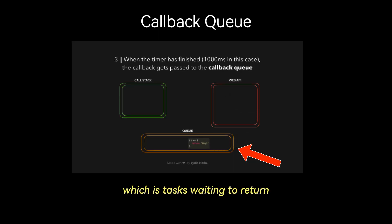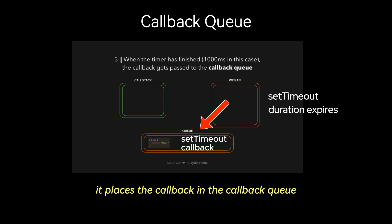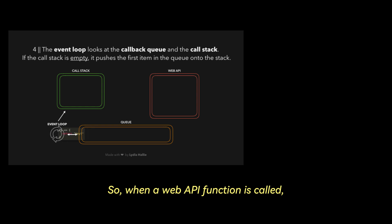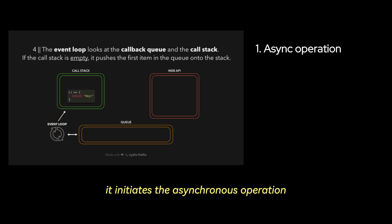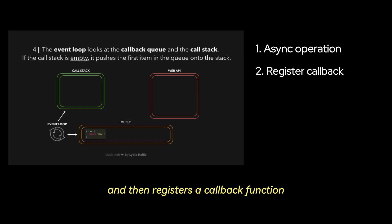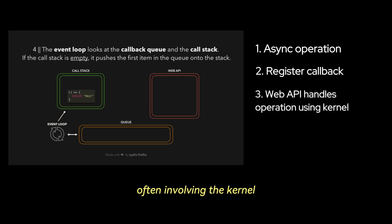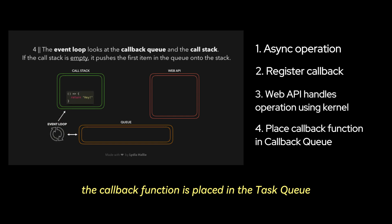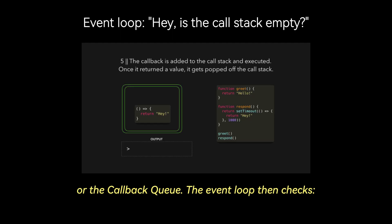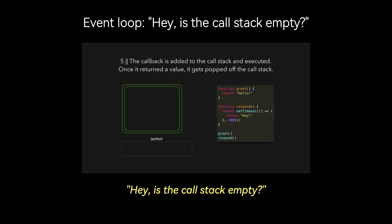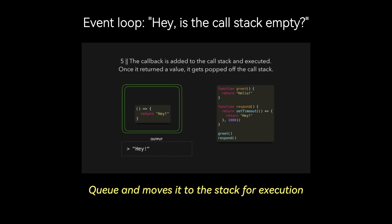Now we have the callback queue, which is tasks waiting to return. Once the web API finishes its job — for example, setTimeout expires — it places the callback in the callback queue. When a web API function is called, it initiates the asynchronous operation and then registers a callback function. The web API handles the operation in the background, often involving the kernel. Once the operation is complete, the callback function is placed in the task queue or the callback queue. The event loop then checks whether the call stack is empty. If yes, it takes the next task from the callback queue and moves it to the stack for execution.